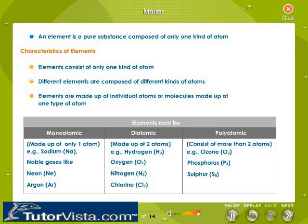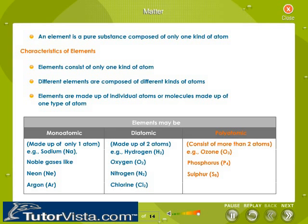Elements are pure substances containing only one kind of atom. There may be more than one atom in an element, in which case it is called a molecule. Elements with only one atom are called monoatomic — for example, sodium and noble gases like neon and argon. Elements like oxygen, nitrogen, and chlorine have two atoms in their molecule and are called diatomic. When there are more than two atoms, it is called a polyatomic molecule — for example, ozone with three oxygen atoms, or sulphur with eight sulphur atoms.